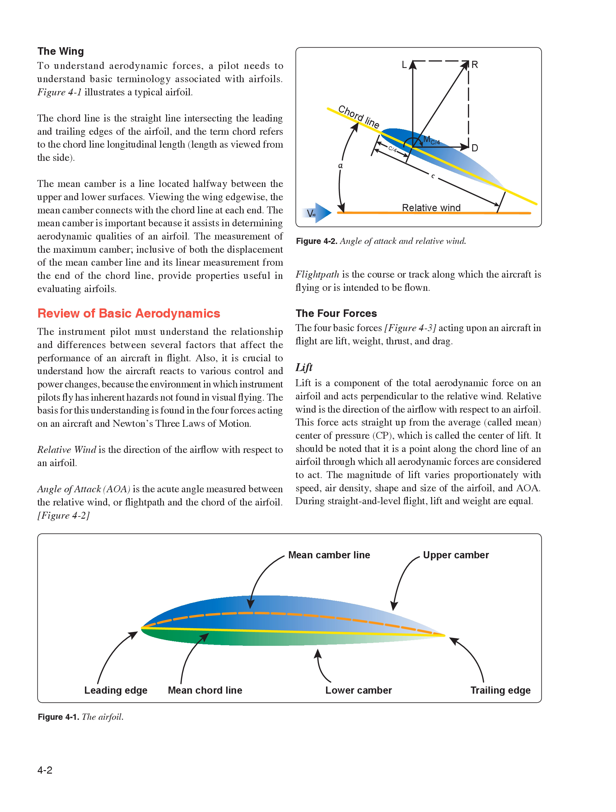The Wing. To understand aerodynamic forces, a pilot needs to understand basic terminology associated with airfoils. Figure 4-1 illustrates a typical airfoil. The chord line is the straight line intersecting the leading and trailing edges of the airfoil, and the term chord refers to the chord line longitudinal length as viewed from the side. The mean camber is a line located halfway between the upper and lower surfaces, connecting with the chord line at each end.